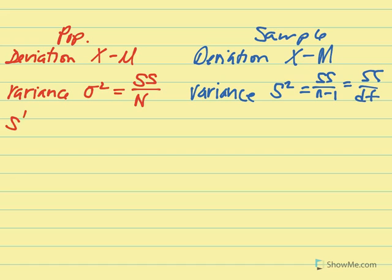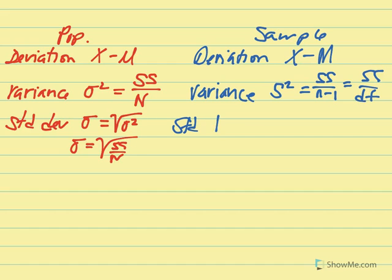Standard deviation is lowercase Greek letter sigma, equal to the square root of our variance, which can also be stated as the square root of SS over N. Those are equivalent. And standard deviation for a sample is denoted by s and that's equal to the square root of variance, which is the square root of SS over n minus 1.